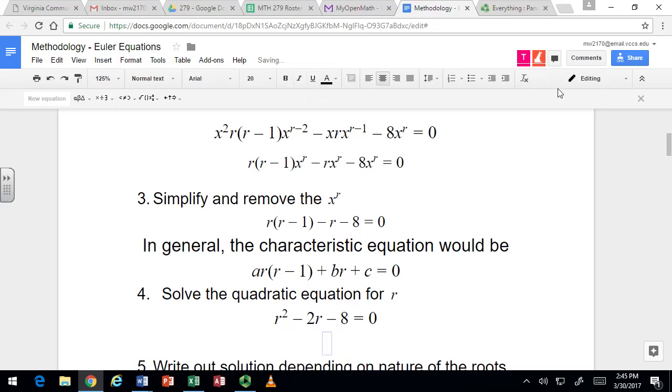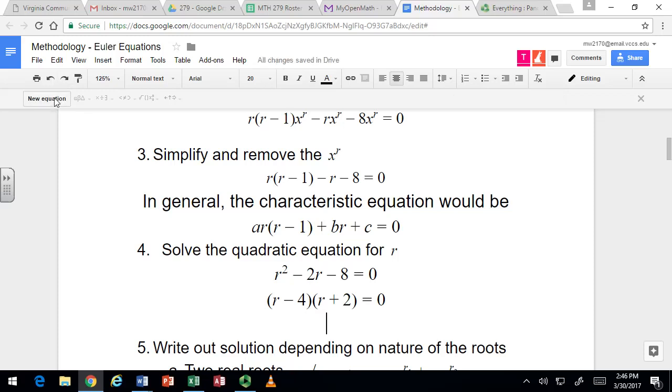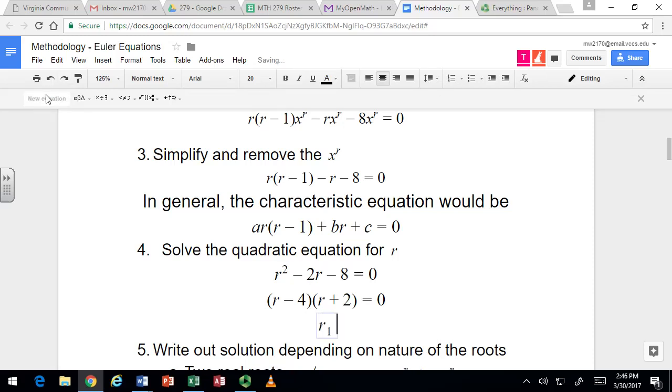So that one looks like it factors. I need two numbers that multiply to negative 8 and add to negative 2. And those numbers are... r plus 2 and r minus 4, and then minus 4 plus 2. Yeah. Looks good. And so the actual solutions are then the opposites of those and we can use subscripts to denote them as negative 2 and 4.